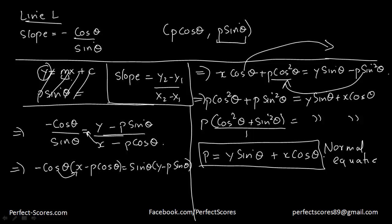And that is the normal equation of a line — the equation of the line in terms of the perpendicular distance P from the origin and the angle theta made by the perpendicular with the x-axis. P is the perpendicular distance from the origin (0, 0), and theta is the positive angle made by the perpendicular with the x-axis. Thank you very much for watching this video and I'll see you in the next one.